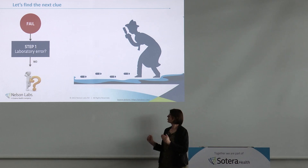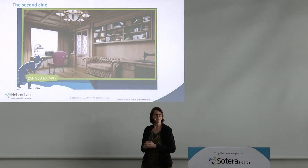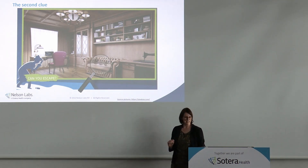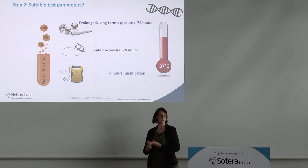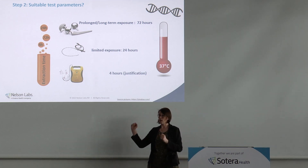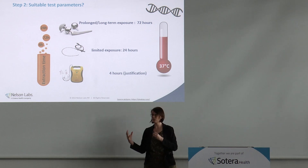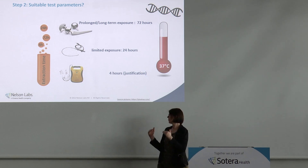What happens if you cannot find a laboratory error? You have to dig deeper. The second clue is the DNA on the couch. You're going to look at whether the extraction conditions were suitable for your device. For instance, the extraction time — ISO 10993 says 24 hours or 72 hours. If you have a short-term exposure device and you used 72 hours extraction time, that's way too long. You can reduce it to 24 hours. Going below 24 hours — minimum is 4 hours — but that needs justification.